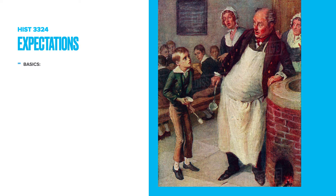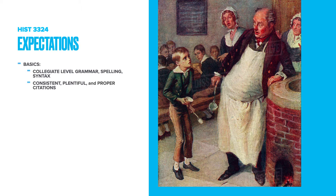Let's get started with some of the basic expectations for your paper. Since this is a junior-level course in a liberal arts discipline, it's anticipated that you are writing at the collegiate level and proofreading for grammar, spelling, and syntax. It's also expected that you will provide consistent, plentiful, and proper citations.